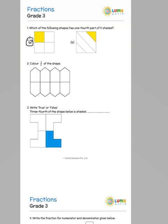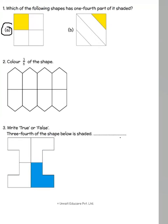The next one is we need to color three by eight of the shape. So which means that I need to shade any three or color any three. So let me color one, two, and three. It could be any three.